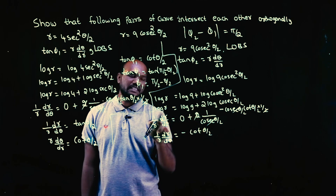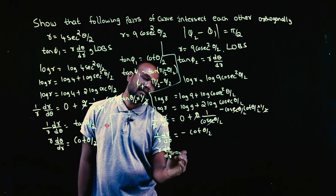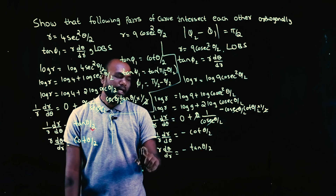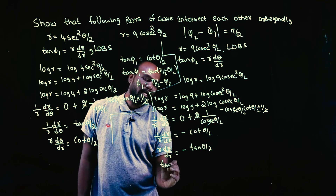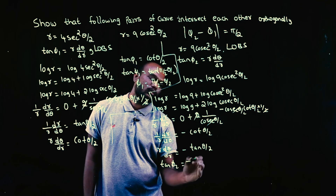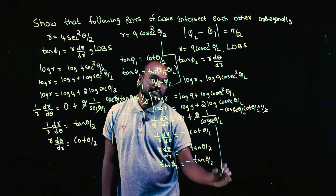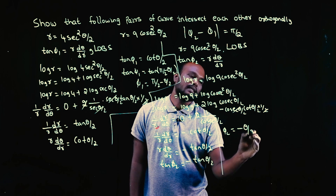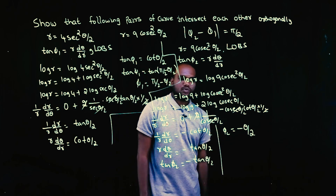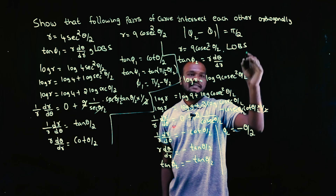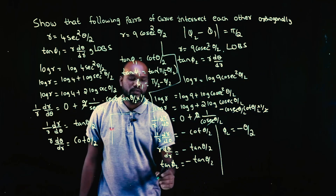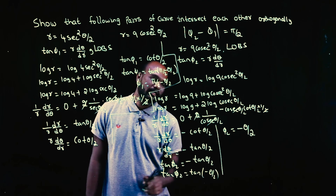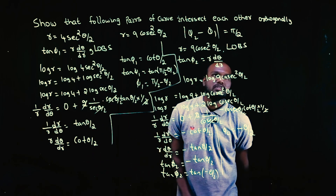I am interested in r dθ/dr, not 1/r, so flipping: r dθ/dr = −1/cot(θ/2) = −tan(θ/2). And r dθ/dr is tan φ₂, so tan φ₂ = −tan(θ/2) = tan(−θ/2). Since tan cancels on both sides, φ₂ = −θ/2.